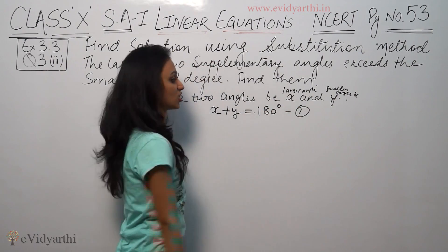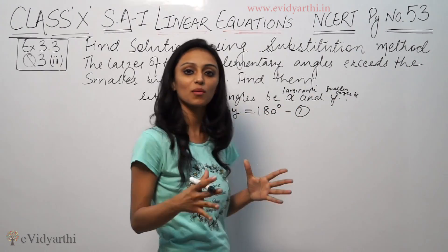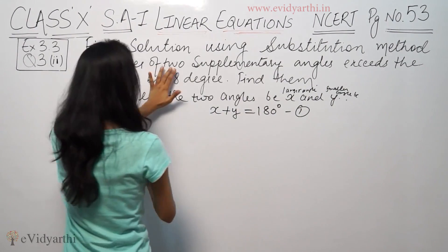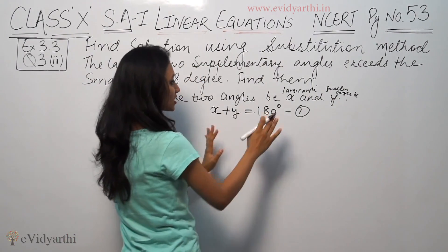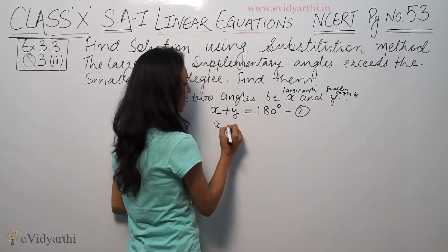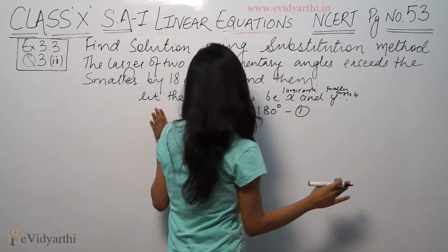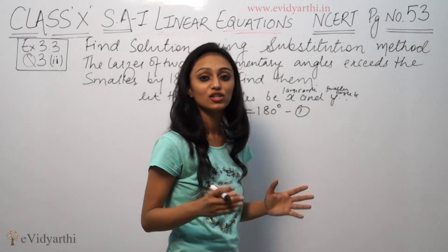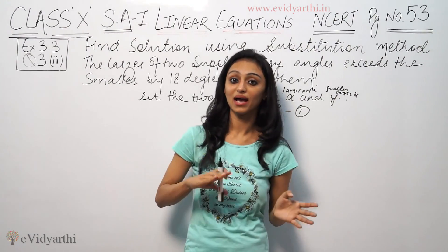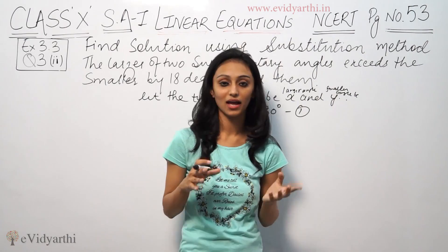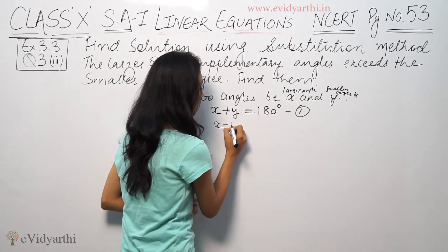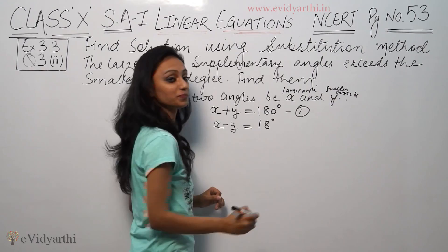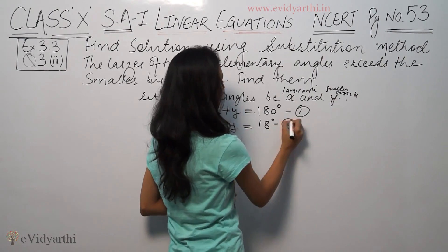So our first equation is: x plus y equals 180 degrees. The larger angle x exceeds the smaller angle y by 18 degrees, meaning x is 18 degrees greater than y. That gives us the second equation: x minus y equals 18 degrees.